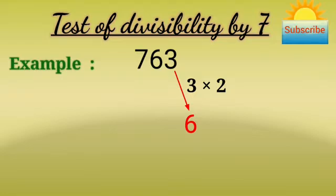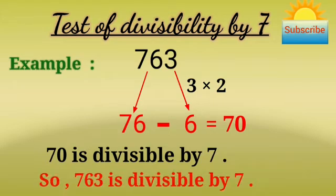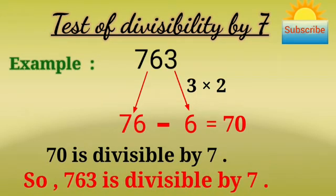The number formed by rest of its digits is 76. Now 76 minus 6 equals 70. 70 is divisible by 7, so 763 is divisible by 7.